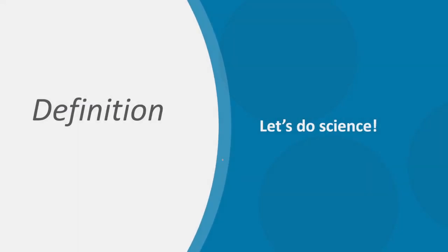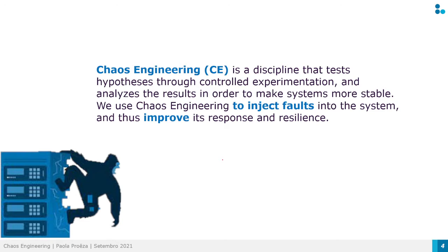So what is Chaos Engineering? Chaos Engineering is a discipline that tests hypotheses through controlled experimentation and analyzes the results in order to make systems more stable. We use Chaos Engineering to inject faults into the system and improve its response and resilience.